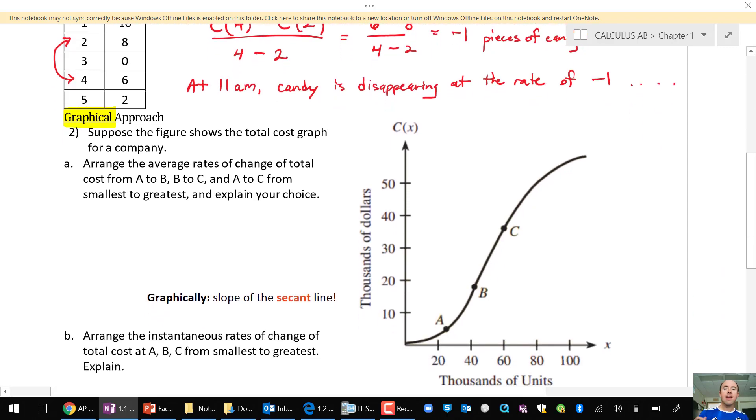The second question here has a picture. So this is a graphical approach. There is no function provided, no data aside from the picture itself. We're going to use a graphical analysis to approach this problem. The graph shows the total cost for a company. Part A says to arrange the average rates of change from least to greatest: A to B, B to C, and then A to C.